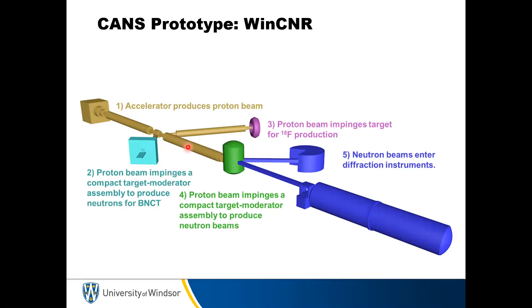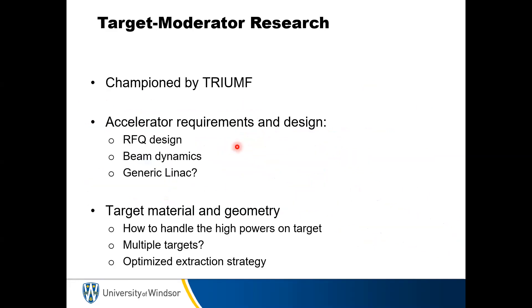There are various aspects that need to be addressed at each stage. For the accelerator and target system: what's the best accelerator, what's the target geometry, what's the target material? Graduate students and postdocs are working on this right now. What does our BNCT facility look like and what are the requirements? Producing medical isotopes is more of a community service but will still take students and researchers to complete. The materials research is made possible through the beam lines. TRIUMF in collaboration with us is really working on the accelerator, target, and moderator.